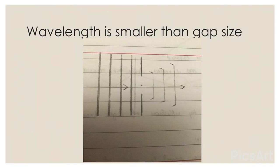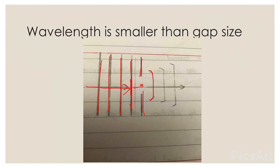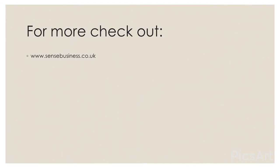Now if the wavelength is smaller than the gap size — here are the waves and this is the gap size, which is a bit bigger than the wavelength — you draw the direction, mark the center point, and then measure the distance between the center point and the first wave. With that same distance, draw the diffracted wavefront with a curve. Do the same for the other waves, draw the curves, and then mark the direction. For more, check out www.sensebusiness.co.uk.